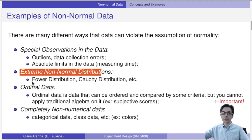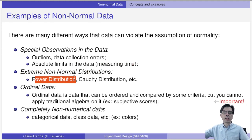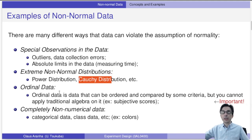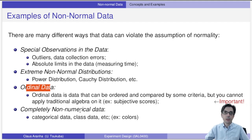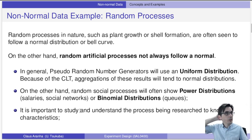We also have extreme non-normal distributions like the power law distribution, which we usually see when measuring things like number of Twitter followers, likes on social media, or social connections. We also have the Cauchy distribution. These are very extreme and the CLT sometimes does not handle them well. We also have ordinal data — data that can be ordered and compared but cannot have traditional algebra applied to it — and non-numerical data like colors.